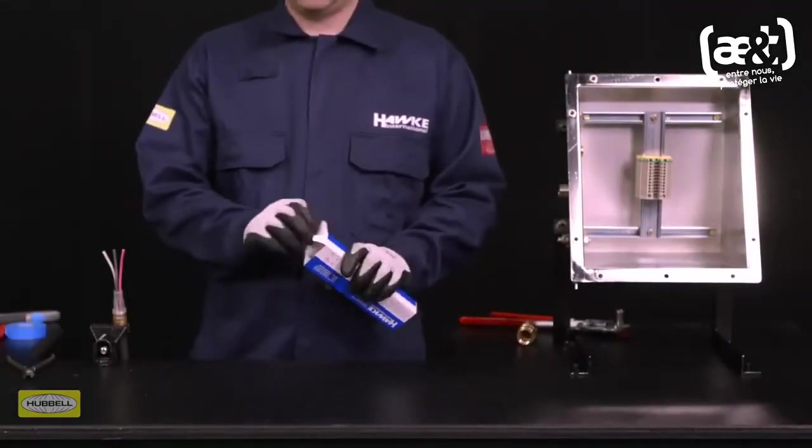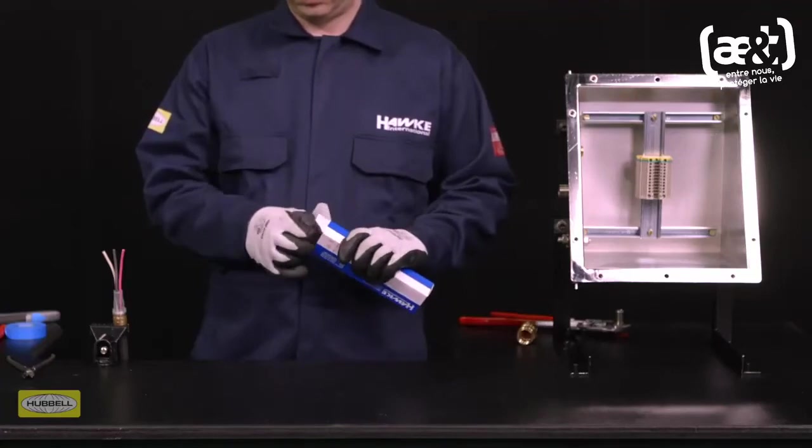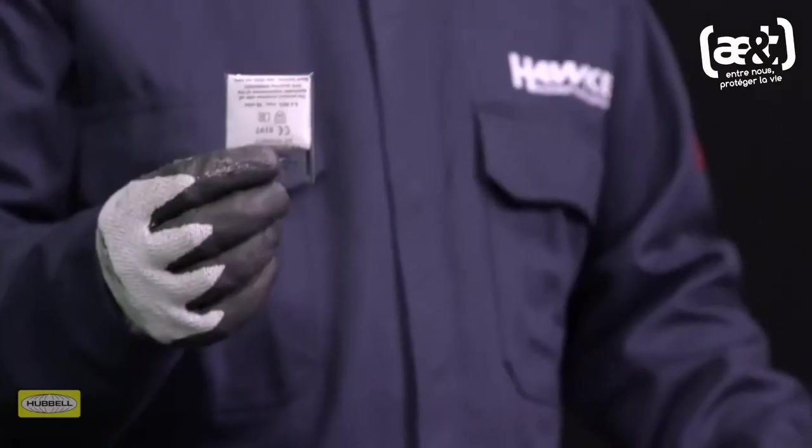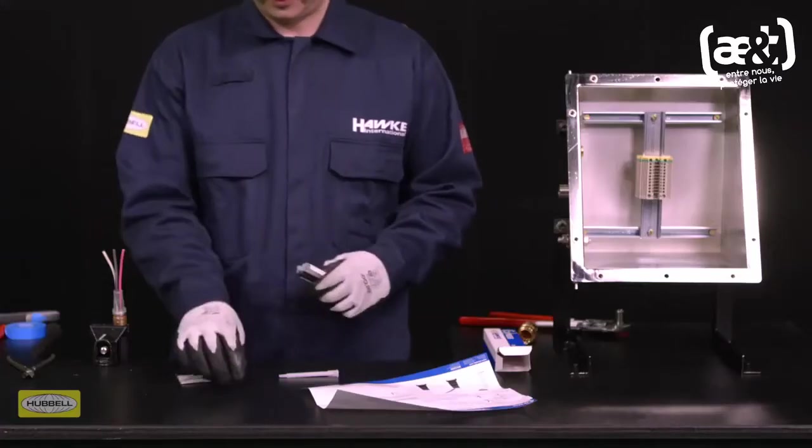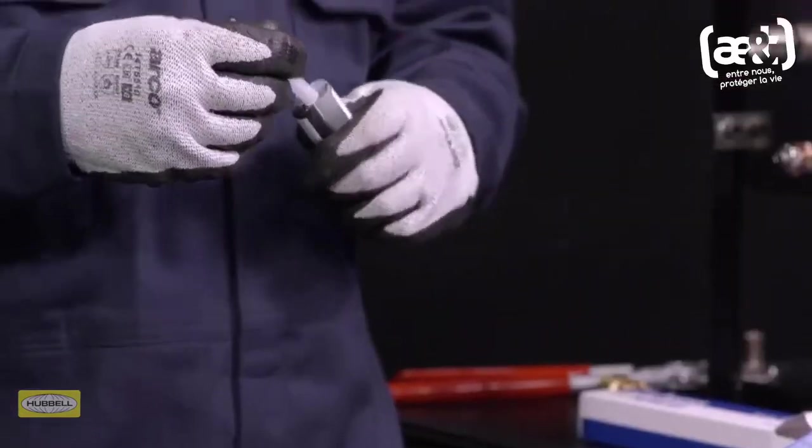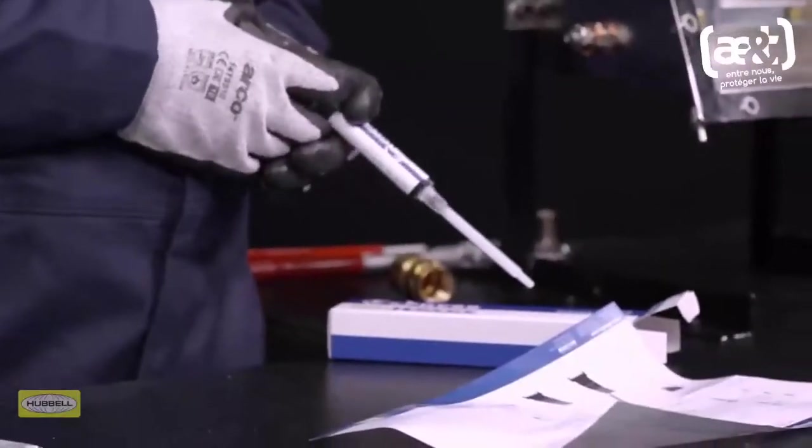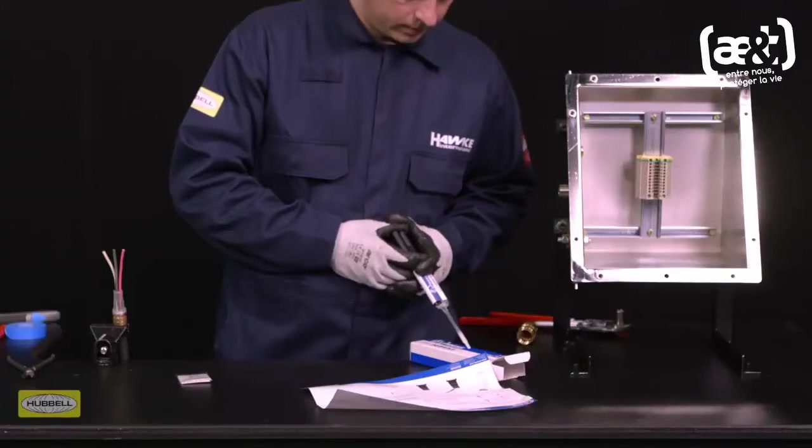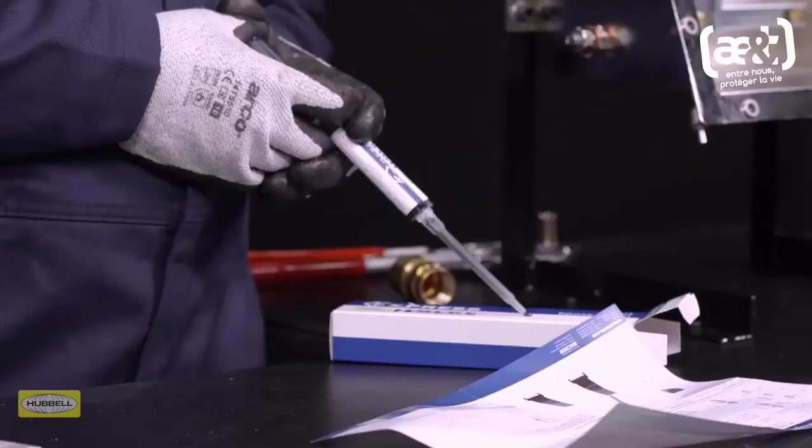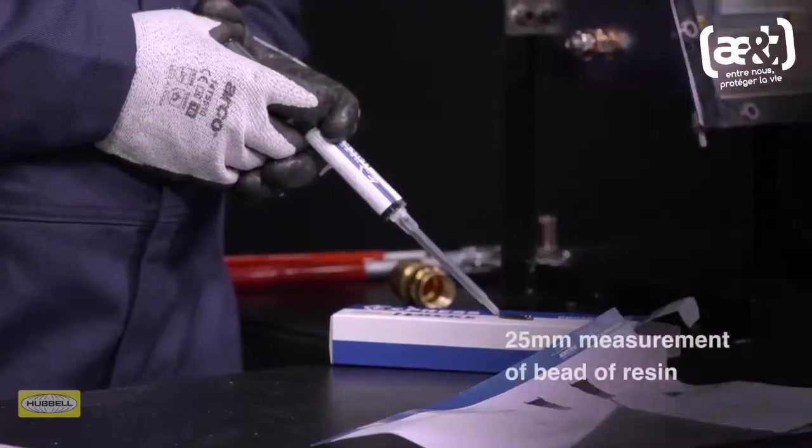Ensure gloves are worn throughout the filling process. They are supplied with the resin as standard. Snap off or unscrew the cartridge lid and fit the nozzle. Purge approximately 25 millimeters or one inch of resin onto a disposable surface to ensure that the resin is properly mixed.